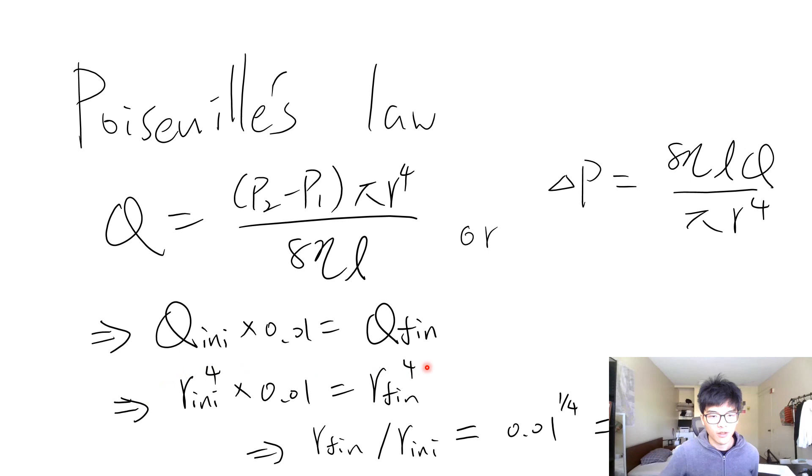Anyways, from this relation, this is given by the question, this can be transformed into this relation. And so the initial radius to the fourth order times 0.01 equals the final radius to the fourth.